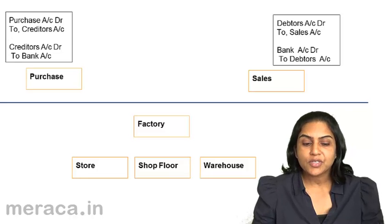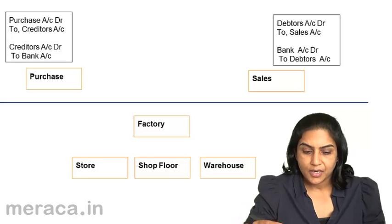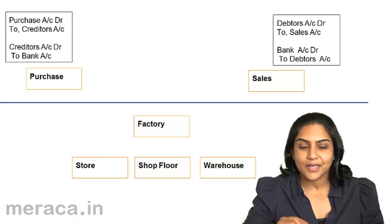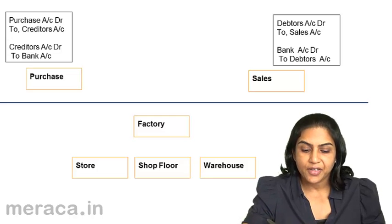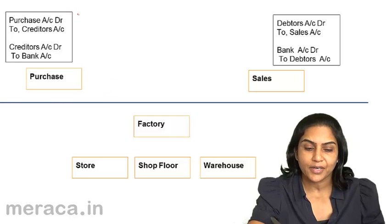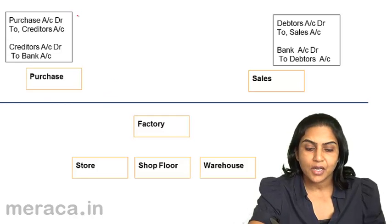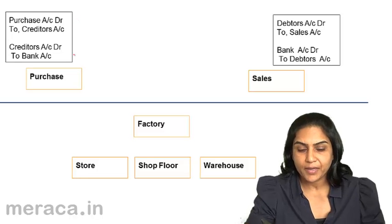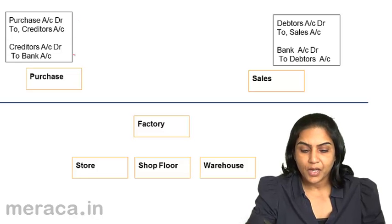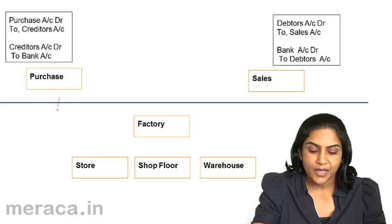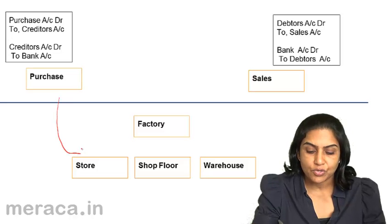When goods or raw materials are purchased, the entry passed in the financial books is: purchases account debit to creditors. And when they are paid, creditors account debit to bank. Once the materials are purchased they come into the stores.